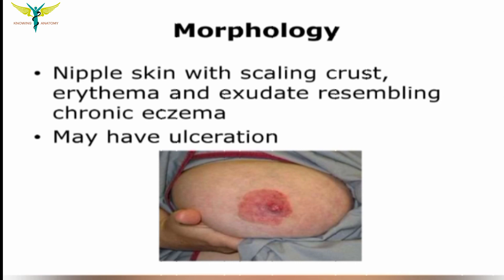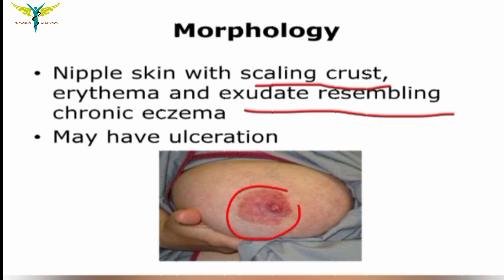Coming to the morphology, the nipple skin presents with scaling crust, erythema, and exudate resembling chronic eczema. The nipple may also have ulceration.